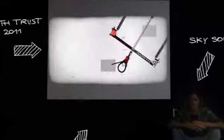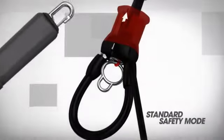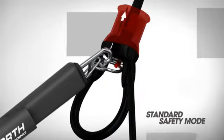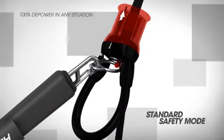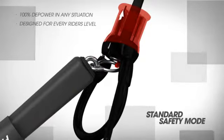When assembling your new Ironheart 4, you can choose between the standard safety mode or the suicide mode. When assembling in standard safety mode, simply clip your leash into the small metal eyelet of the metal ring. The standard safety mode offers you 100% depower in all conditions and is designed for every rider level.